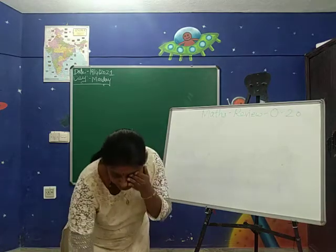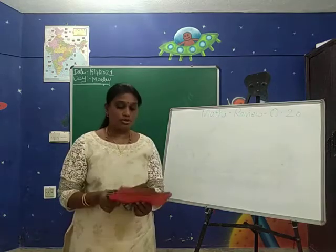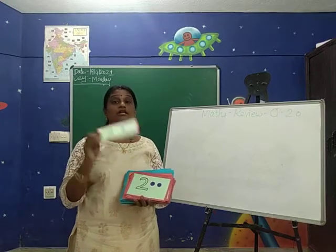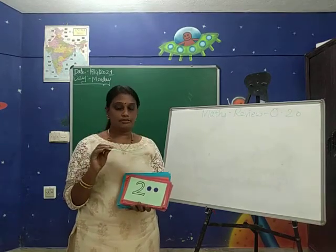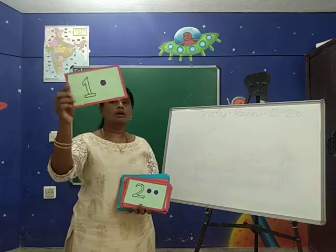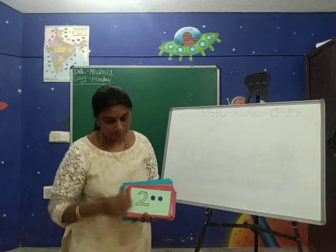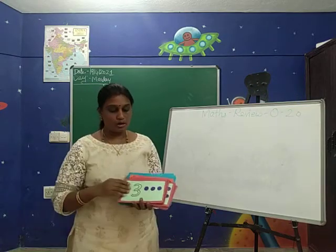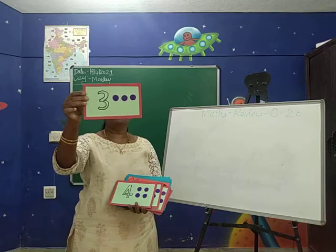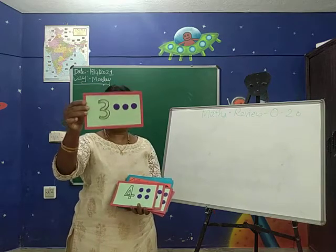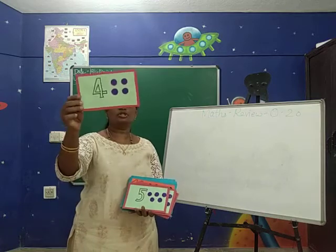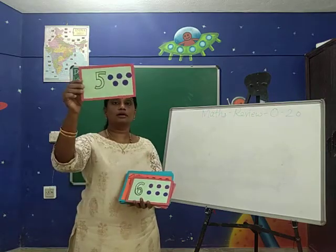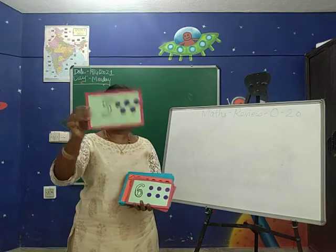Next, we will revise the numbers with the flash card. I will show you the flash card one by one — please tell me, children. What number is this? With the dotted card, you have to count and tell me. What is this number? 1 for 1 dot. Next comes 2 for 2 dots. Next, what is this number? 3 for 3 dots. After 3, which number comes? That is 4 — 4 for 4 dots. After 4, which comes? That is number 5 — 5 for 5 dots. Please observe the dots and count, children.